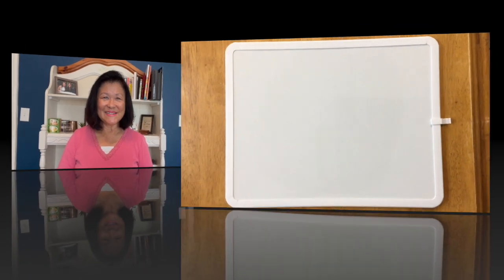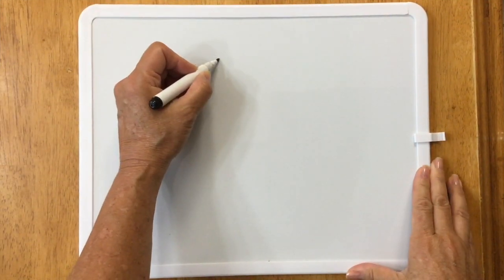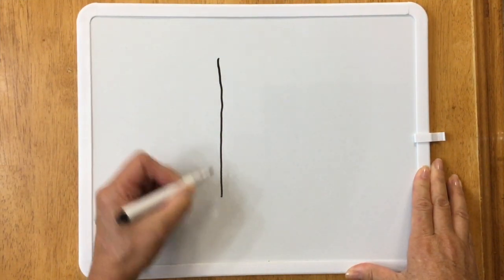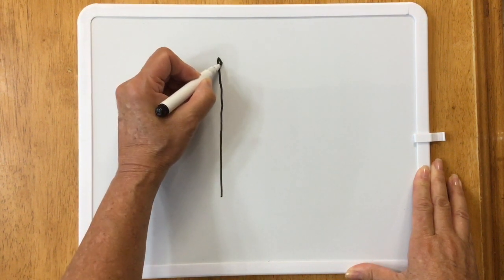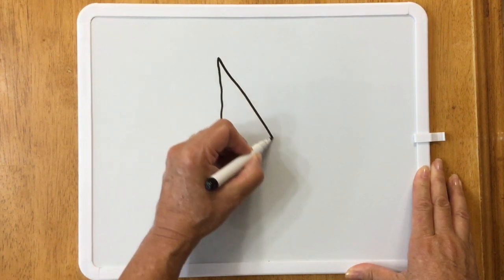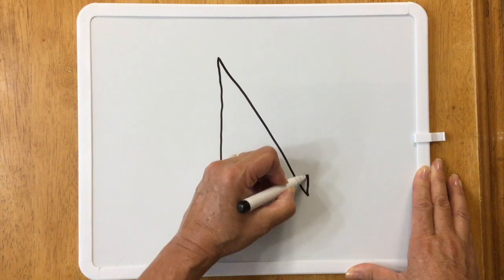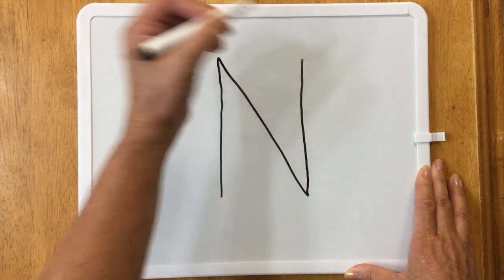Now let's draw another one. You start at the top, draw a straight line down. Go back to the top and slant a line down. Then you finish up with a straight line going up. Awesome job!